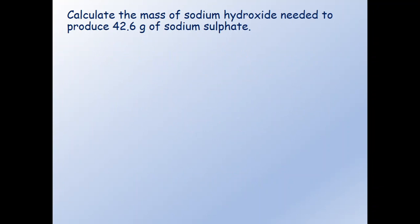Our example question is this: calculate the mass of sodium hydroxide needed to produce 42.6 grams of sodium sulfate. Normally with a question like this you will be given the balanced equation. So we have sodium hydroxide reacting with sulfuric acid to produce sodium sulfate and water: 2NaOH + H₂SO₄ → Na₂SO₄ + 2H₂O.